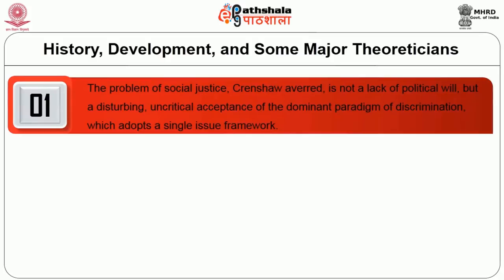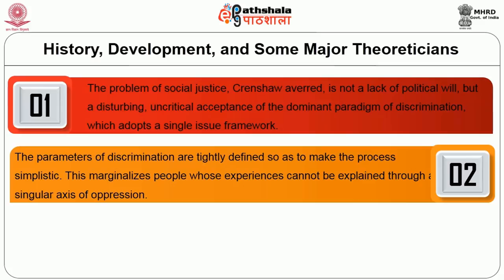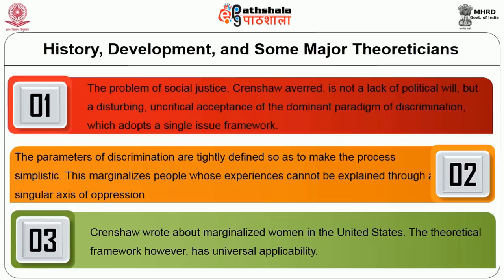The problem of social justice Crenshaw argues is not a lack of political will but a disturbing uncritical acceptance of the dominant paradigm of discrimination which adopts a single-issue framework. The parameters of discrimination are tightly defined so as to make the process simplistic, marginalizing people whose experiences cannot be explained through a singular axis of oppression. Crenshaw wrote about marginalized women in the United States, but the theoretical framework has universal applicability.